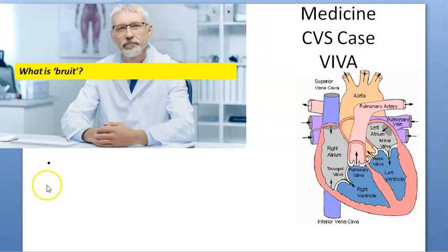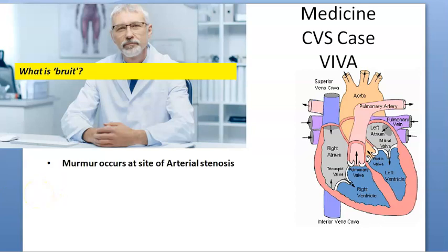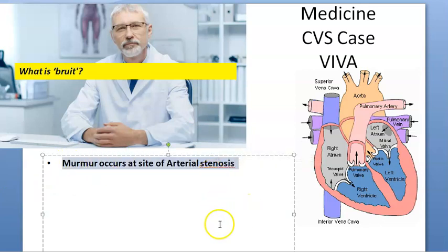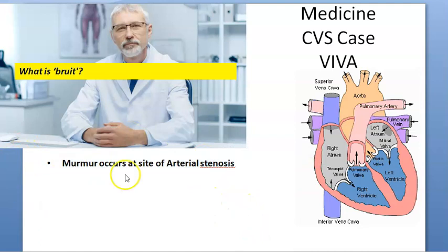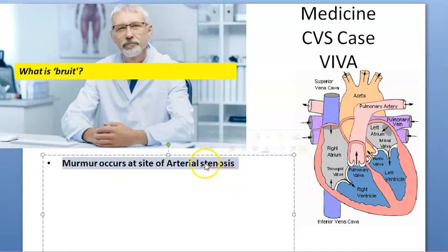What is a bruit? A bruit means the murmur is occurring at the site of arterial stenosis — like a renal artery or a carotid artery — so the murmur is occurring there because of the artery being stenosed, and it is away from the heart.